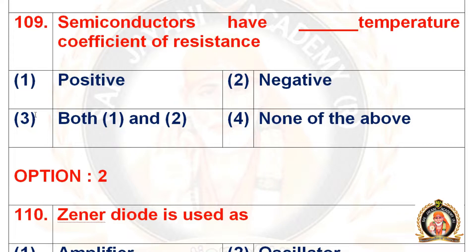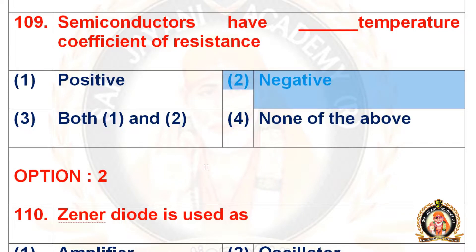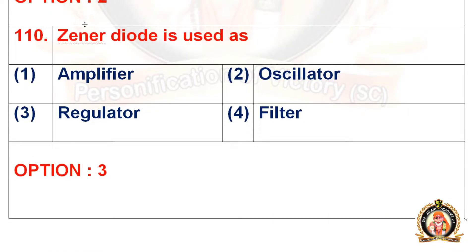Question 109: Semiconductors have dash temperature coefficient of resistance. The options are positive, negative, both positive and negative, and none of the above. The right option is negative — semiconductors have a negative temperature coefficient of resistance.